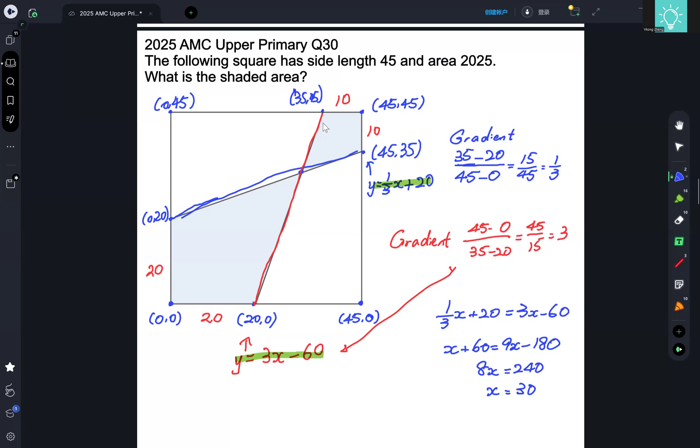So that means this value here is one third of x plus 20, which is 10 plus 20, which is 30, and 90 minus 60, which is also 30. So this point is actually 30, 30.